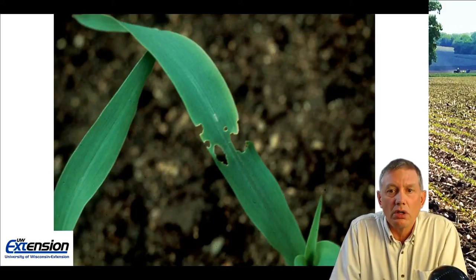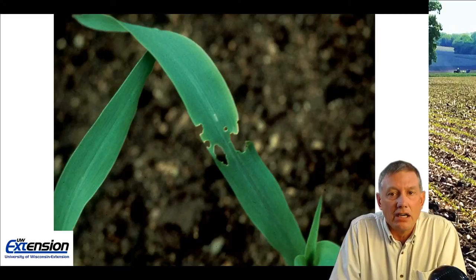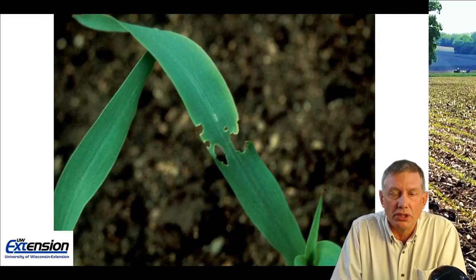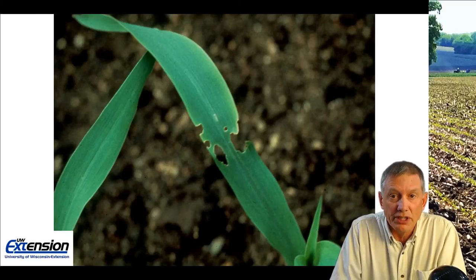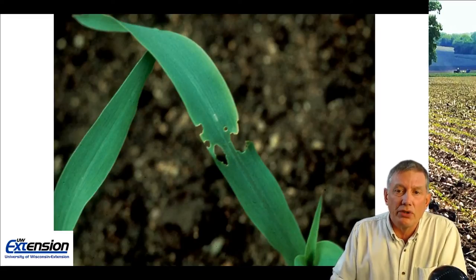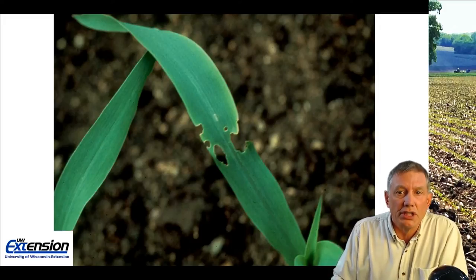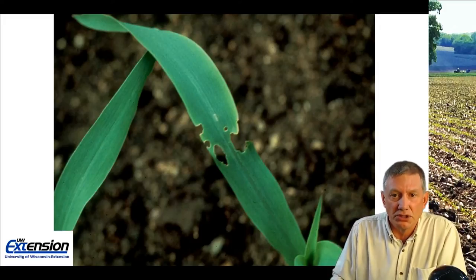Here's a picture of what small larvae can do on any stage of corn plant — usually small holes in the leaf. Although not economic at this point in time, it is a sign that black cutworms are feeding in that field. And again, not economic, but it's a sign that you need to be back in that field within the next few days up to a week to see how that damage is progressing.